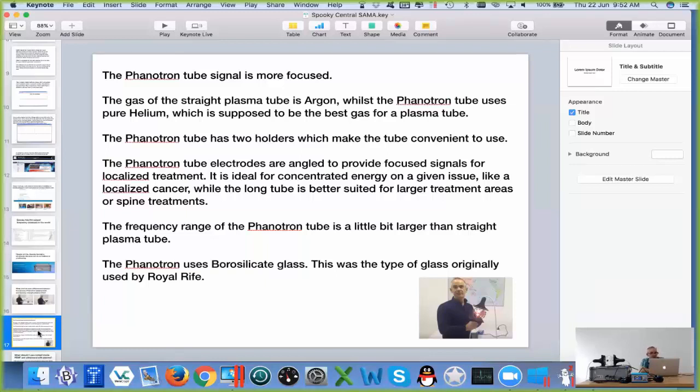Mercury was certainly around and in use whilst Royal Rife was making his machines. He chose not to use mercury. He had his good reasons, and we're going to follow him.